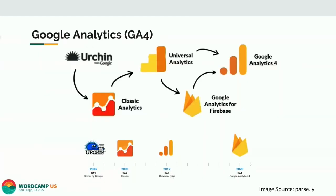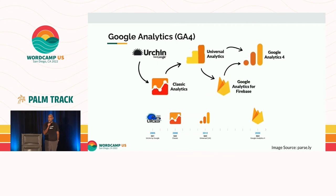Here is the quick history of Google Analytics. It started off as Urchin, a company Google bought in 2005, then became Classic Analytics in 2008. Universal Analytics was 2012, which is about 10 years old — and in 2022 we are moving to GA4. The reason we call it GA4 is this is the fourth iteration of Google's analytics.